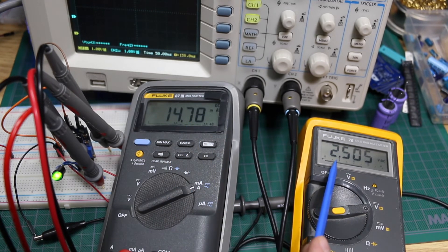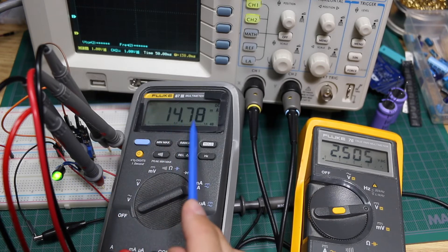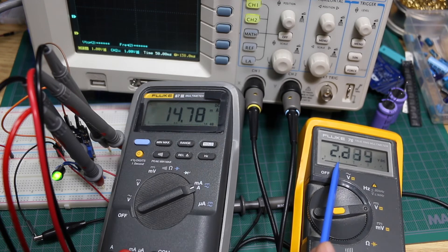At 2.5 volts in, the light is still drawing the same 14.78 milliamps. If I lower it all the way down to 2, still drawing 14.77 milliamps on the output of the converter to drive this light.